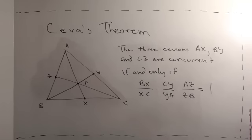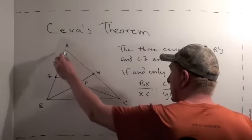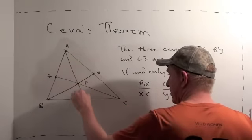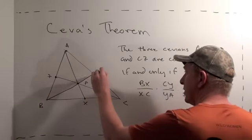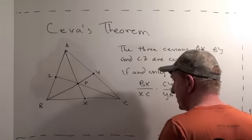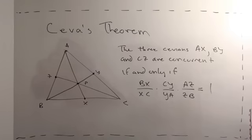In order to understand this theorem, you have to know what a cevian is, and a cevian in a triangle is simply a line segment that starts at one of the vertices and goes to the opposite side. So in this case AX is a cevian, BY is a cevian, and CZ is a cevian, and here's the theorem.